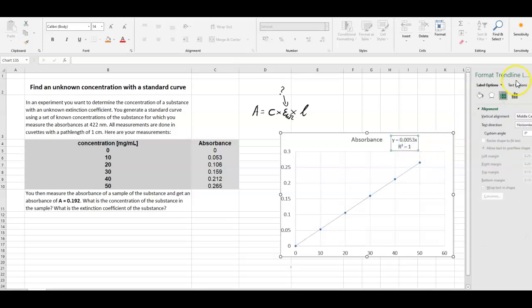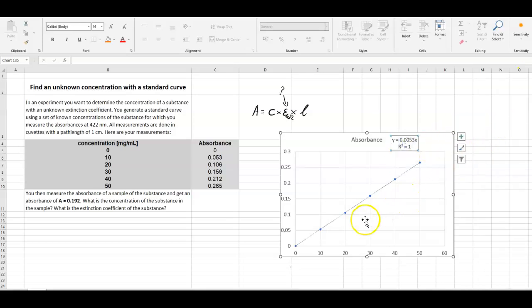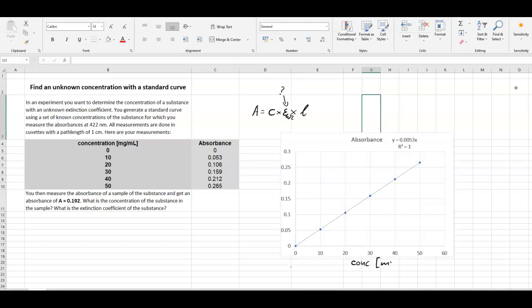So this is our trend line for this curve. Now, let's quickly write down what the different axes represent. So on the x-axis, we've got the concentration and that would be in milligram per milliliter. And on the y-axis, we have the absorbance.